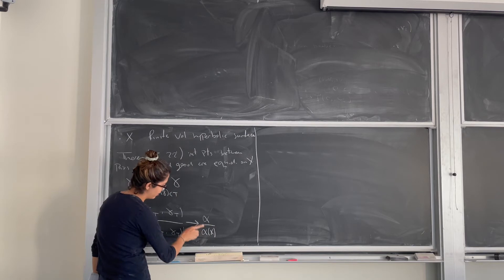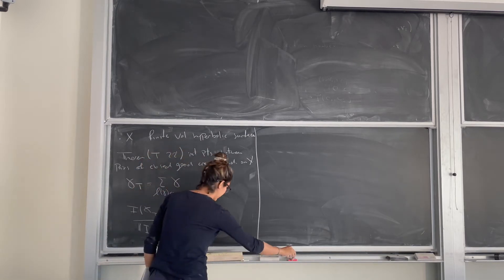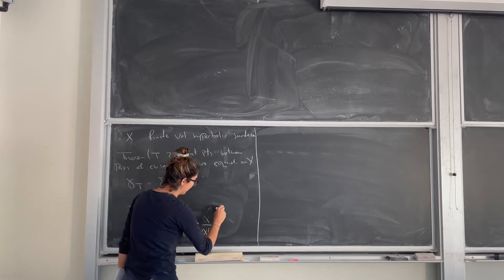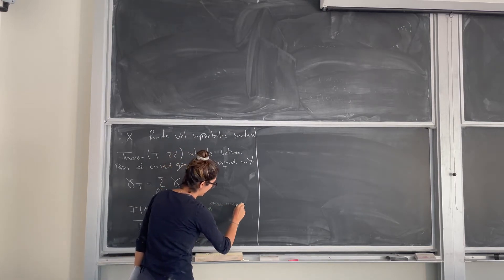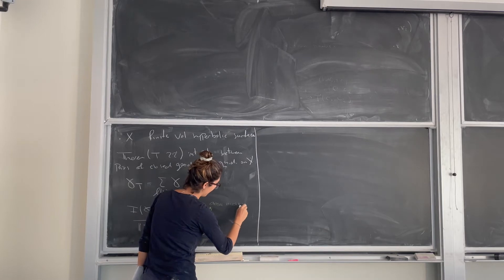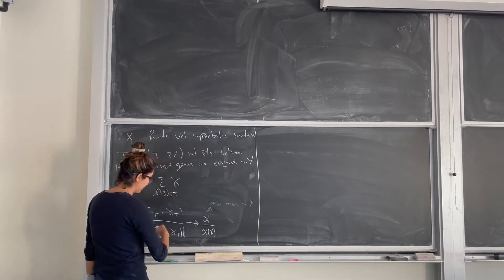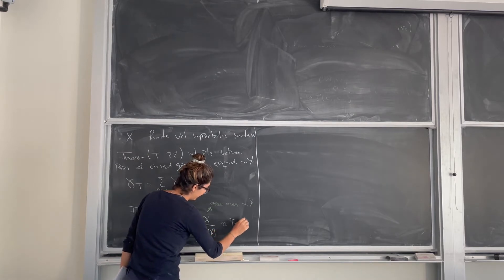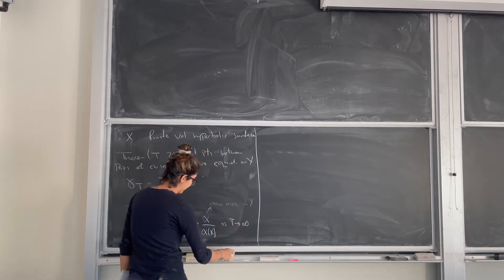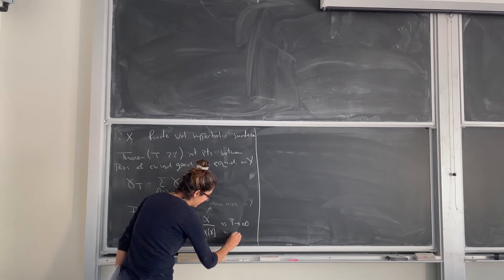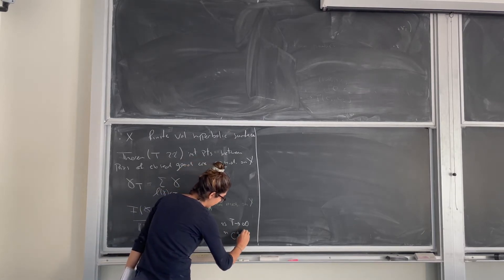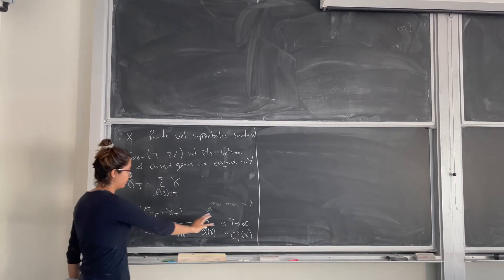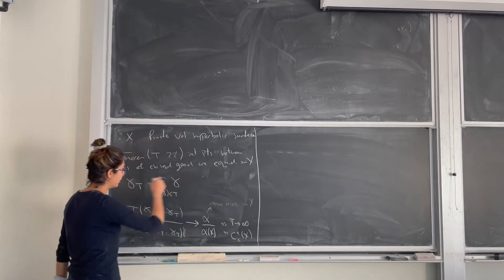We also normalize the area measure, which I call alpha — the area measure on x. So the normalized delta measure at intersection points converges to this uniform measure on x as t goes to infinity, in the dual of compactly supported functions on x. This is what we mean by equidistribution.